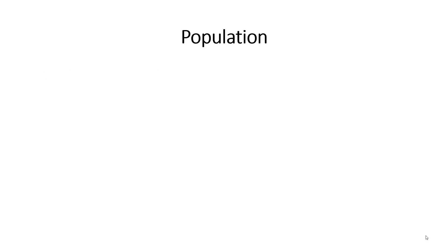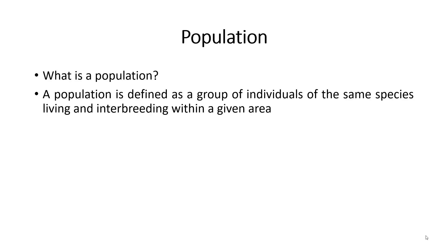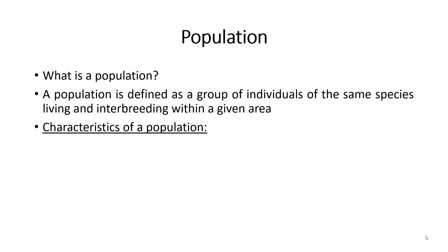What is population? A population is defined as a group of individuals of the same species living and interacting within a given area. Or it is defined as a group of individuals of the same species that occupy a specific area over a certain period of time. Let's look into some of the characteristics of a population. They are never truly stable, meaning that populations of organisms change or fluctuate from low density to high density and then fall back to approximately their original size.